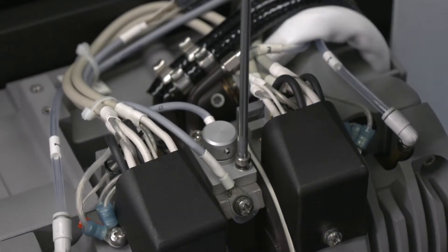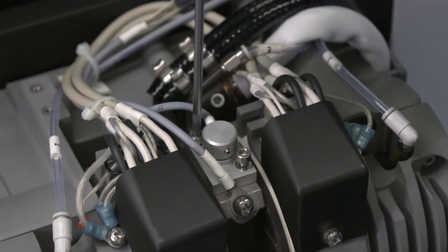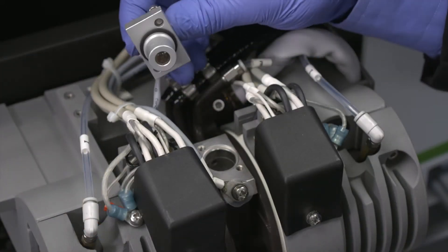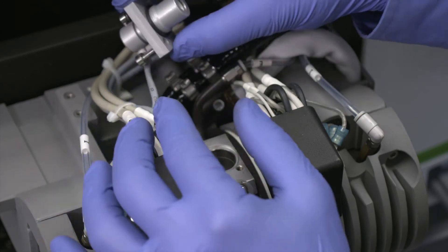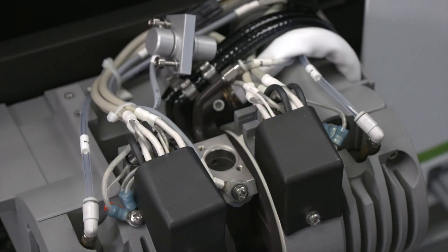Using the torx driver, unscrew the two captive socket head screws that secure the optical sensor to the rear contact housing. Carefully pull the optical sensor out of the rear contact housing. Make sure you do not damage the o-ring and move the optical sensor to the side.